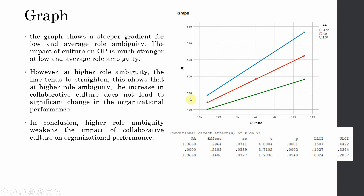The graph shows a steeper gradient for low (blue) and average (orange) levels of role ambiguity compared to high (green). The impact of culture on organizational performance is stronger at low and average role ambiguity. At higher role ambiguity, the line tends to flatten, showing that increases in collaborative culture do not lead to significant changes in organizational performance. In conclusion, higher role ambiguity weakens the impact of collaborative culture on organizational performance.